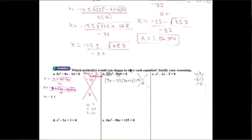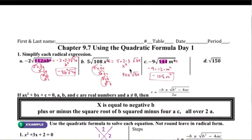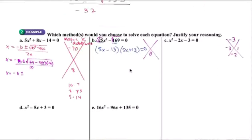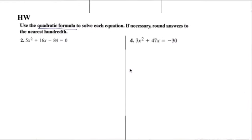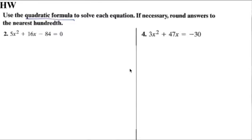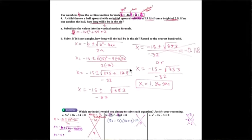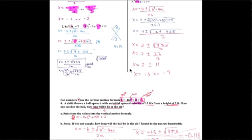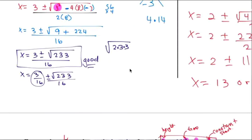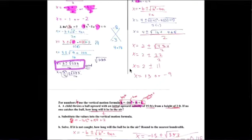It's this worksheet here. The homework portion is right there where I put HW. We're going to use the quadratic equation. If necessary, round the answer to the nearest hundredth. Otherwise, we leave it all in radical form. Do not change it — leave it in radical form.